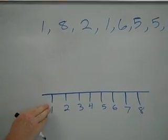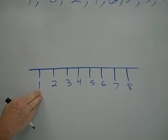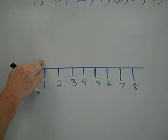A line plot is very easy to read. All you have to do is remember that when a mark is above a number, that's how many times the number occurs.